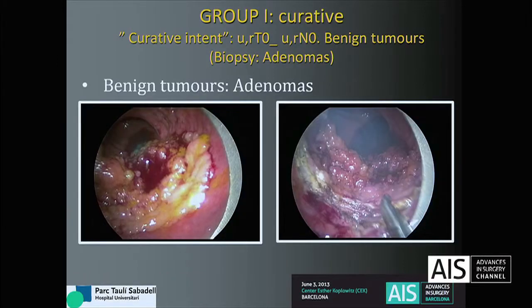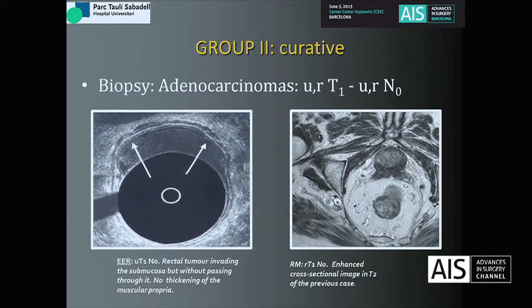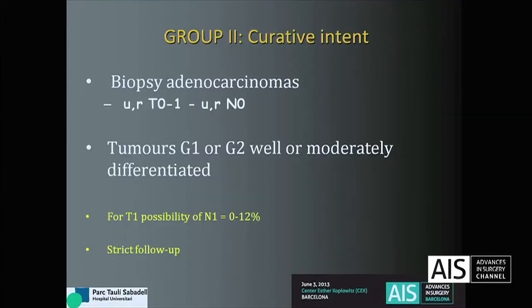Group 1 includes patients with adenoma on biopsy or benign biopsies with ultrasound and MRI showing T0, N0. Group 2, the more important group, includes biopsy of low-grade adenocarcinoma T1 and N0. In this group, the indications are for tumors that are G1 or G2, well or moderately differentiated. We must not forget that the possibility of node-positive disease ranges from 0 to 12%, so a strict follow-up is necessary.